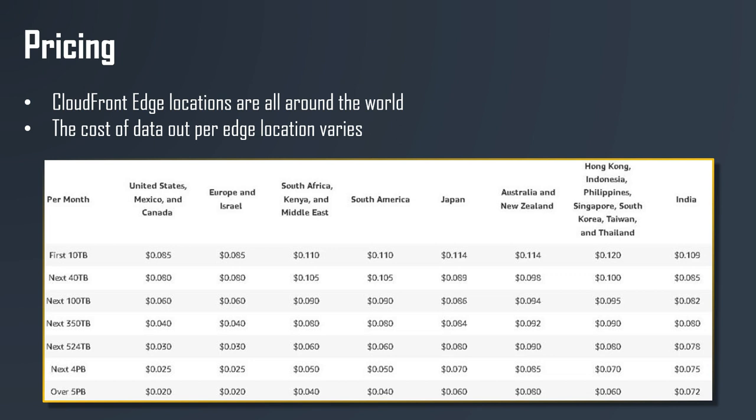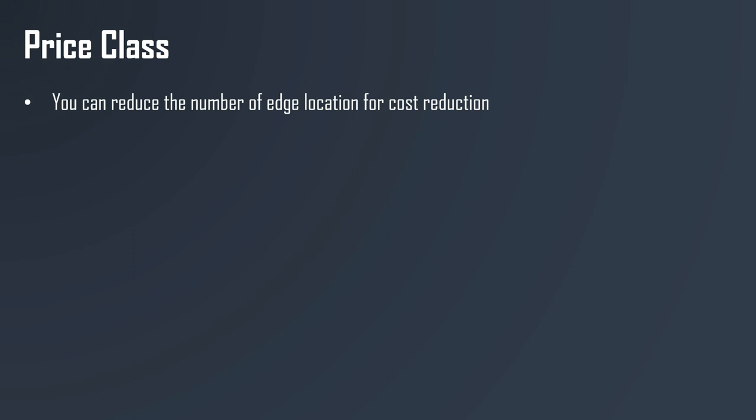If you transfer over 5 petabytes of data out of CloudFront, you're only going to pay $0.02 from the United States. From left to right in the pricing table, you have higher costs, which brings us to price classes. You can reduce the number of edge locations around the world used for your CloudFront distribution in order to reduce costs.